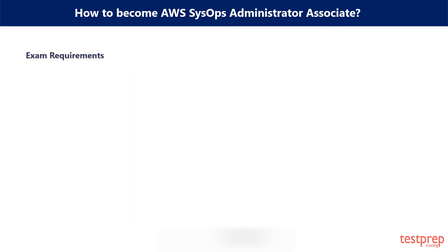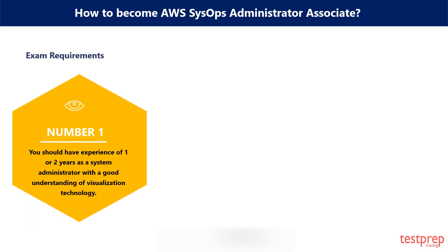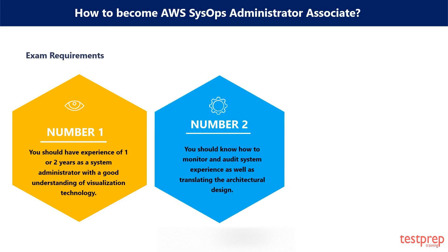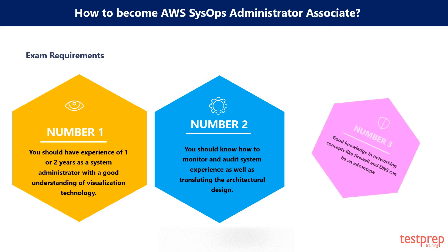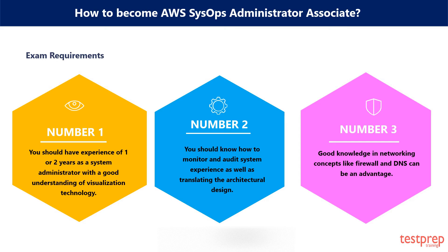Exam Requirements. Following are the exam requirements for the AWS SysOps Administrator Exam. First, you should have experience of one to two years as a system administrator with a good understanding of visualization technology. Second, you should know how to monitor and audit systems, as well as translate architectural design. Third, good knowledge in networking concepts like firewall and DNS can be an advantage.